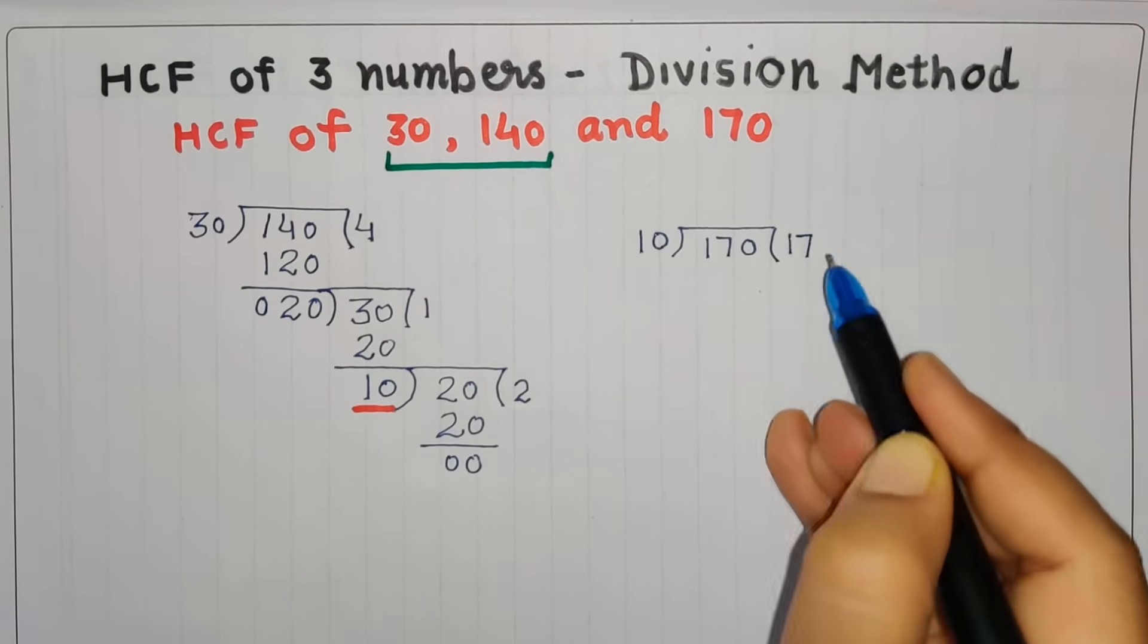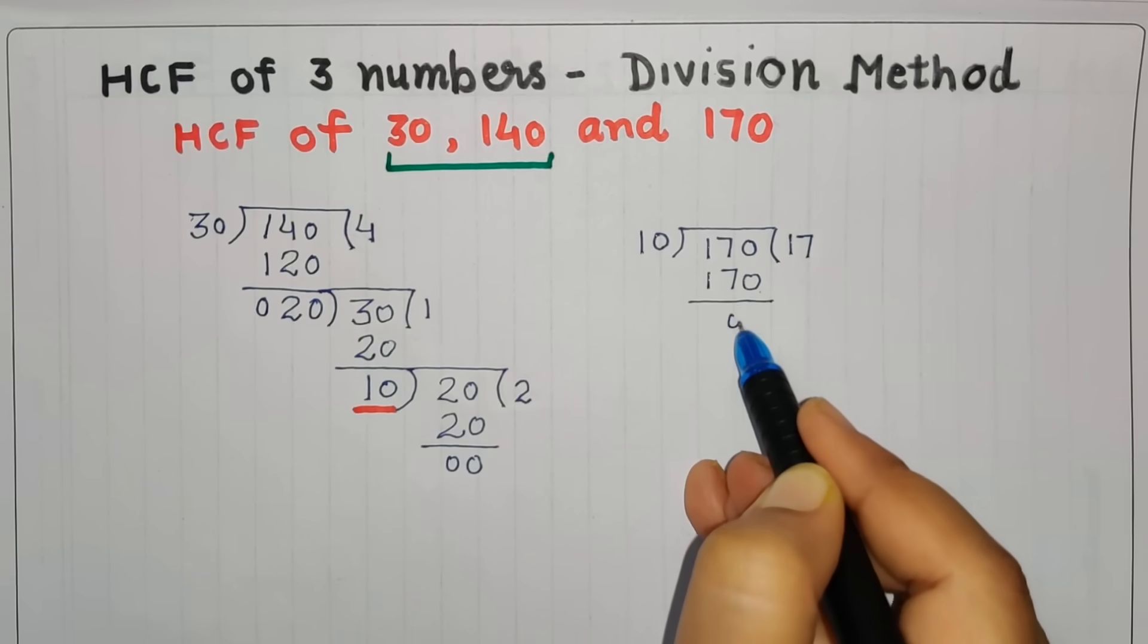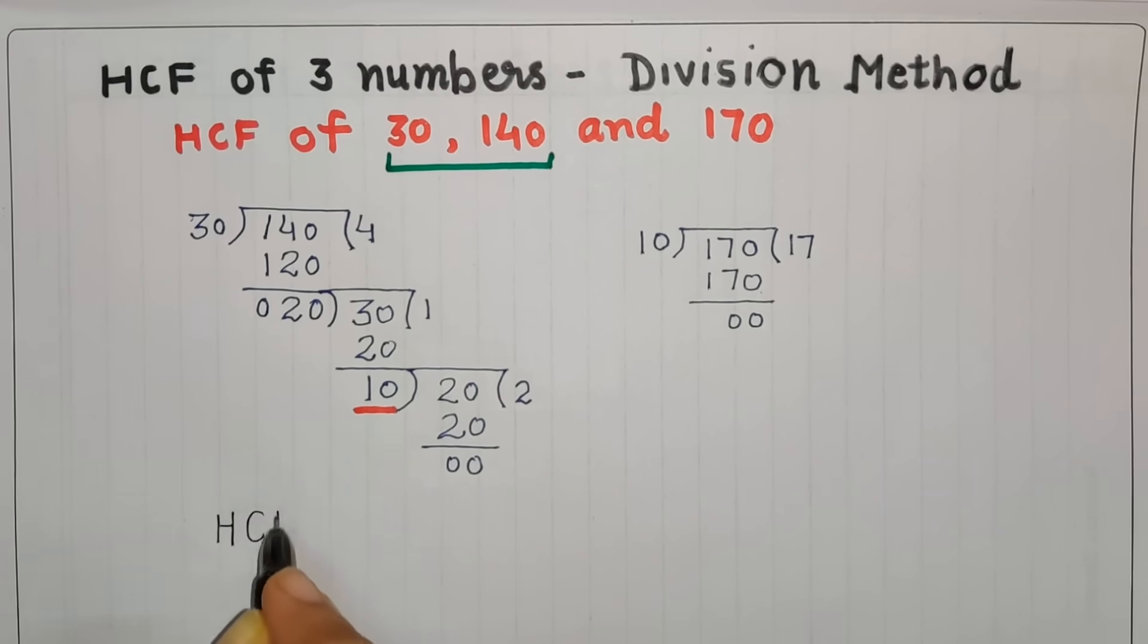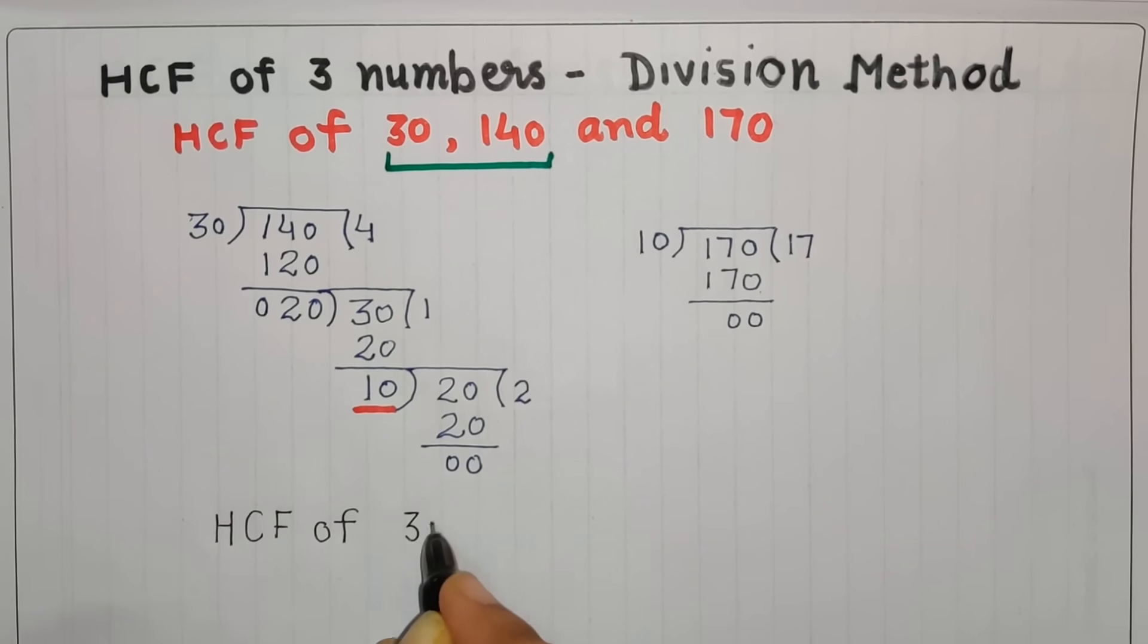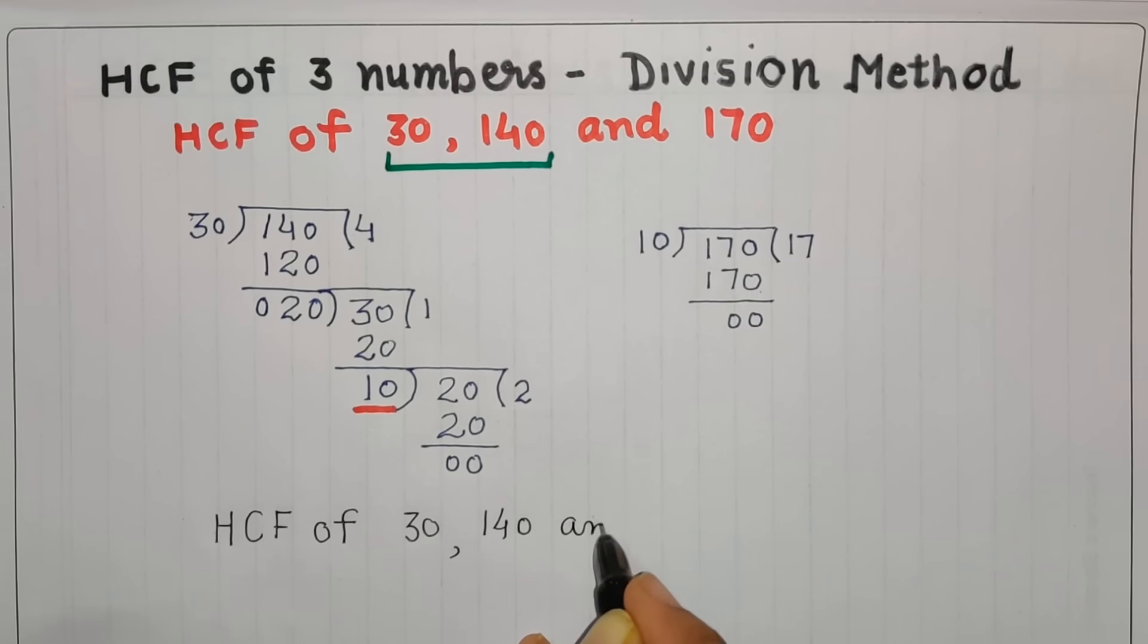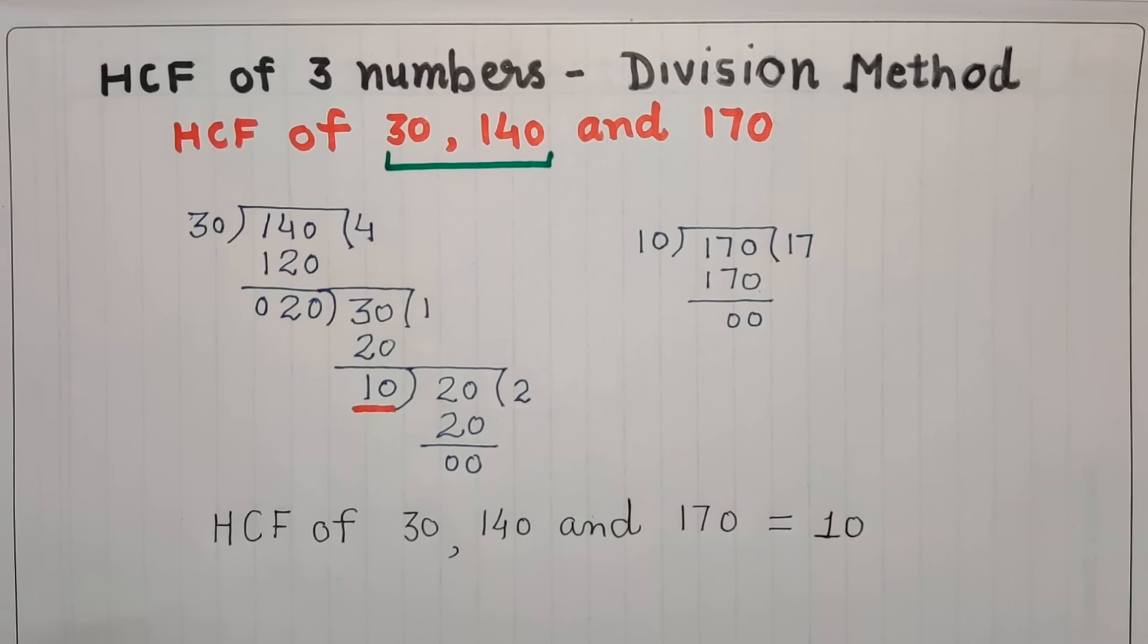The answer is here. The remainder has become zero, so we can say that HCF of 30, 140, and 170 is equal to 10. Thank you.